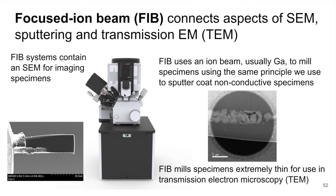A focused ion beam uses an ion beam — usually gallium ions — to mill or remove material from the specimen, changing its shape. This is very similar to sputtering. We can take a large sample and cut it down to size in order to make a very thin TEM sample. We'll talk more about this when we get into TEM and the different ways we can prepare samples for TEM.